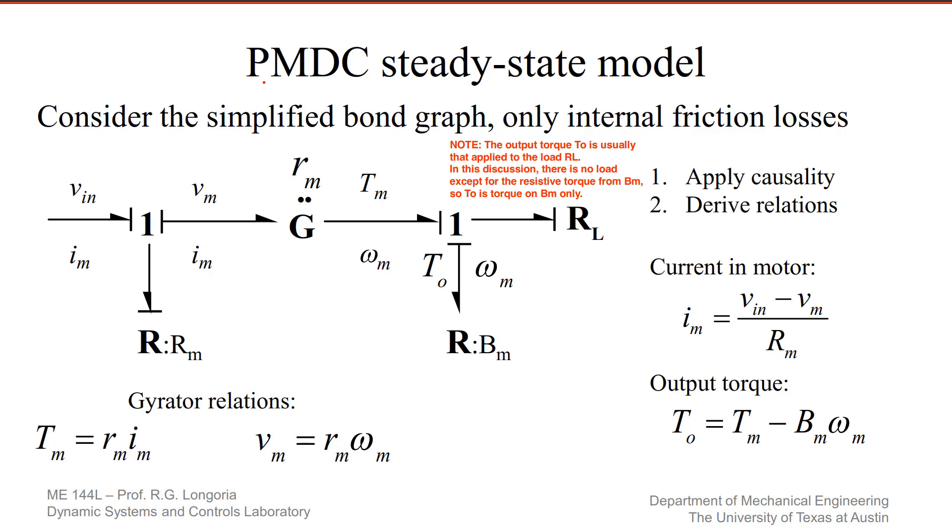Here's a steady-state model of the permanent magnet DC motor, and I've only included internal friction losses. Normally where we would have inductance would be on this bond here. We would have an I element to represent kinetic energy storage in the form of electrical energy and inductance. I'm also leaving out, actually, I'm not showing it here, even though it will be included, is the rotor inertia.